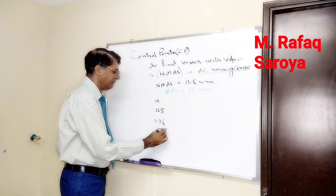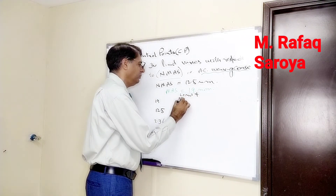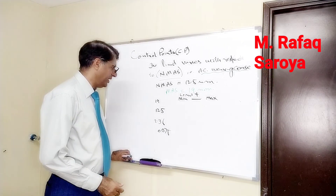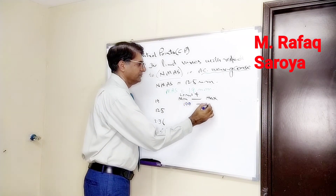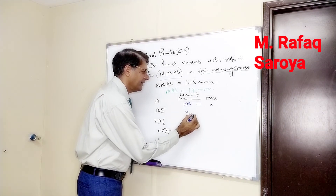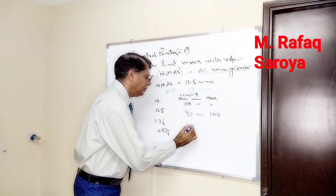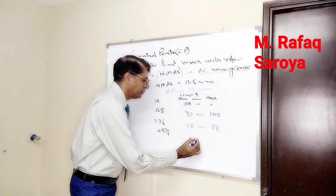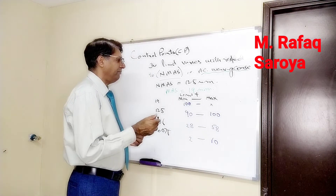The four sieves are: MAS 19 mm, NMAS 12.5 mm, 2.36 mm, and 0.075 mm. Now we define the limits — meaning minimum and maximum percent passing. At MAS, 100% of material should pass. At NMAS, the limit is minimum 90%, maximum 100%. At the intermediate sieve, it is 28% to 58%. At the smallest sieve, it is 2% to 10%.